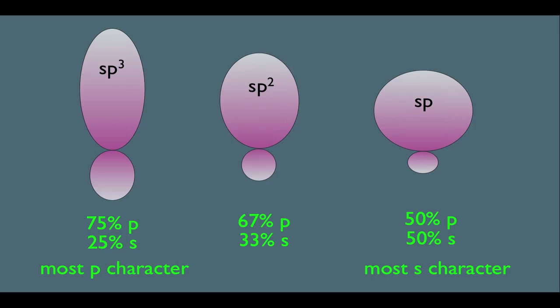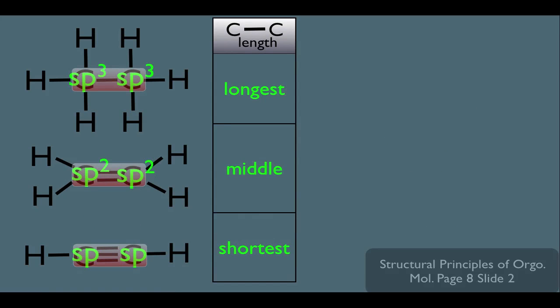That means that if you're an atom that's sp hybridized, since your orbitals are more shorter, that means your bonds are going to be shorter. And that's why the bottom molecule with the sp hybridized carbons would have the shortest bonds, and the top molecule with the sp3 hybridized carbons would have the longest bonds.